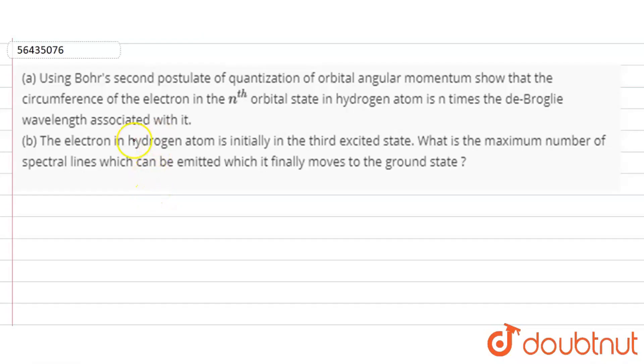Hello students! Here is a question. Using Bohr's second postulate of quantization, orbital angular momentum shows that the circumference of electron in the nth orbital state in hydrogen atom is n times the Debruglie wavelength associated with it. So let's see, the nth orbital state, the circumference of electron in the nth orbital state is n times the Debruglie wavelength.